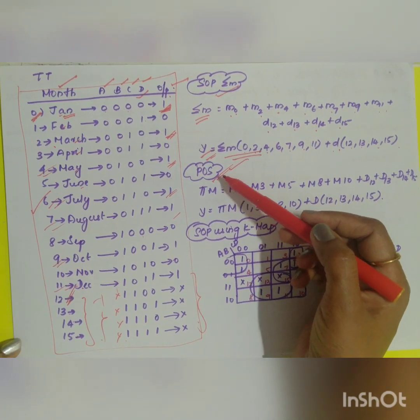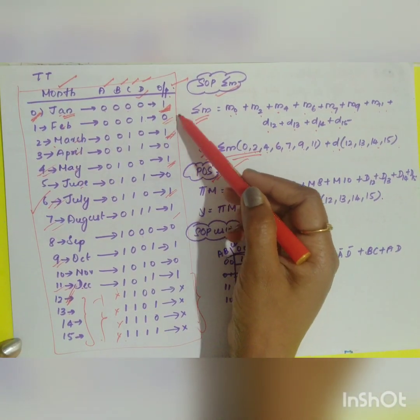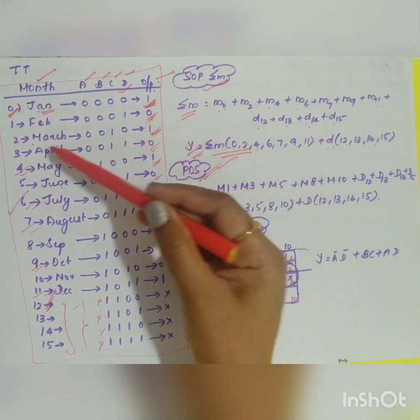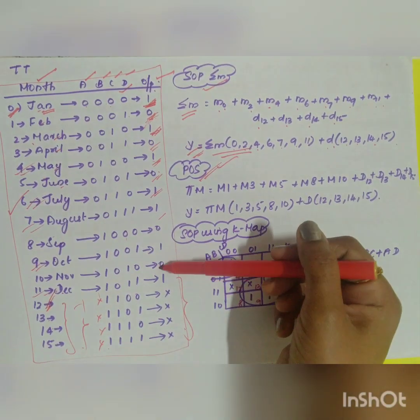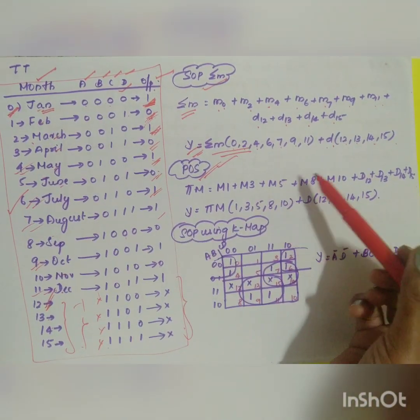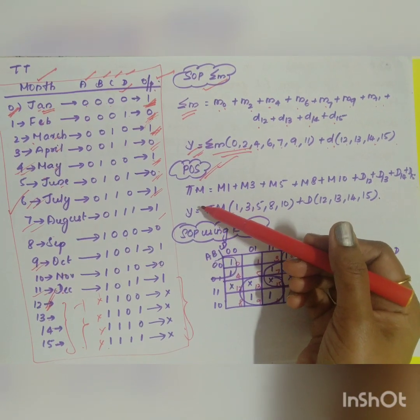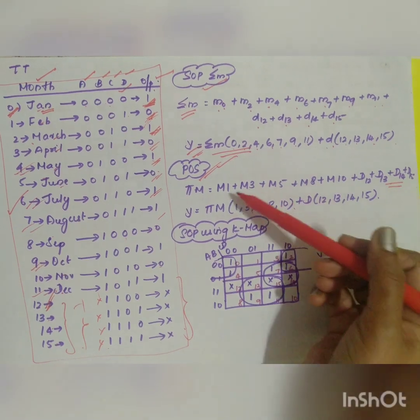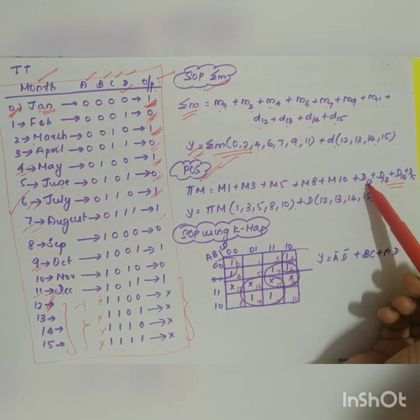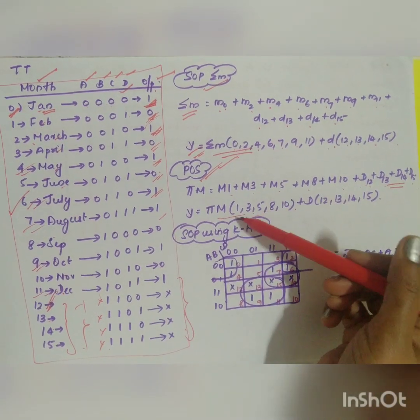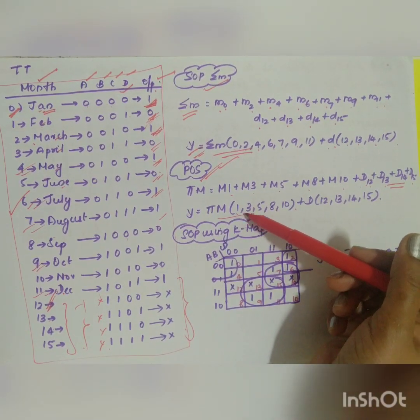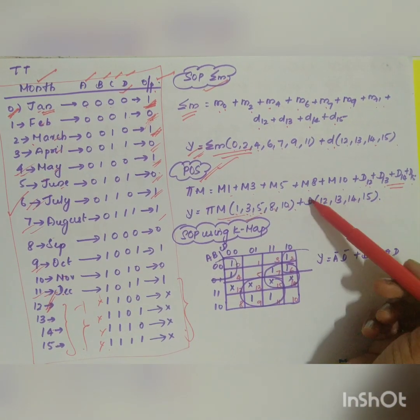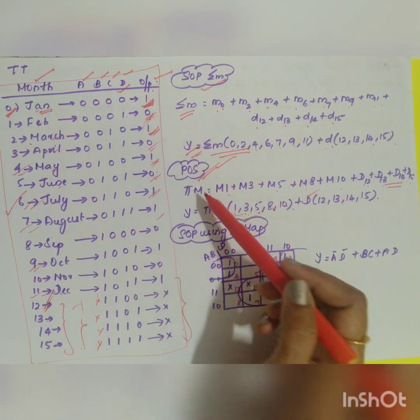Now, what will be your product of sum? Product of sum will be equal to wherever your output is equal to 0. What are the values where you have 0? 1, 3, 5, 8, 10. So you have product of sum is equal to 1, 3, 5, 8, 10 plus you have your don't care. M1, M3, M5, M8, M10 plus don't care is equal to 12, 13, 14, 15. So y is equal to product of sum of max terms 1, 3, 5, 8, 10 and 12, 13, 14, 15 will be your don't care. So your first part is over.